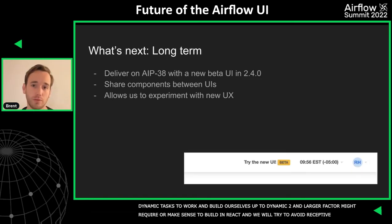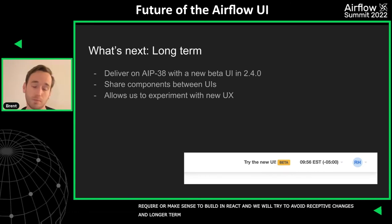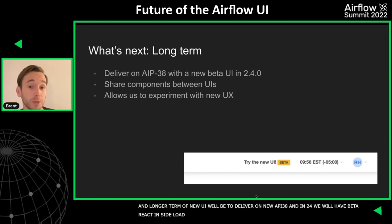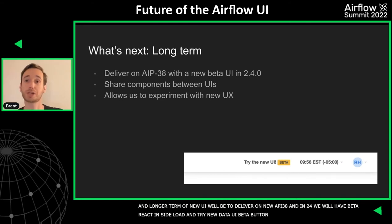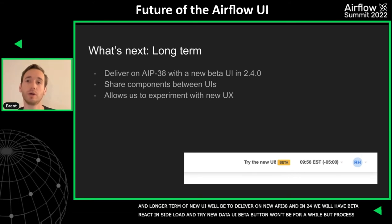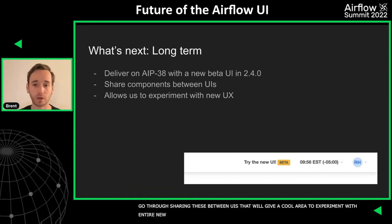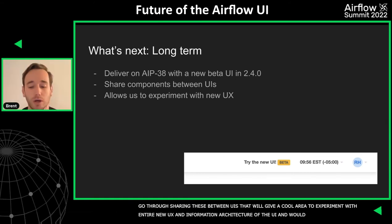Longer term, the new UI will actually deliver on AIP 38. In 2.4, we are going to have a beta UI that is pure React that you can sideload — you'll get a little 'try the new UI beta' button. It won't be feature complete for a while; that's still a process we'll go through. We'll be sharing these React components between those UIs, but that will give us a great area to experiment with an entire new UX and information architecture, and we'd love to get everyone's opinions on that.